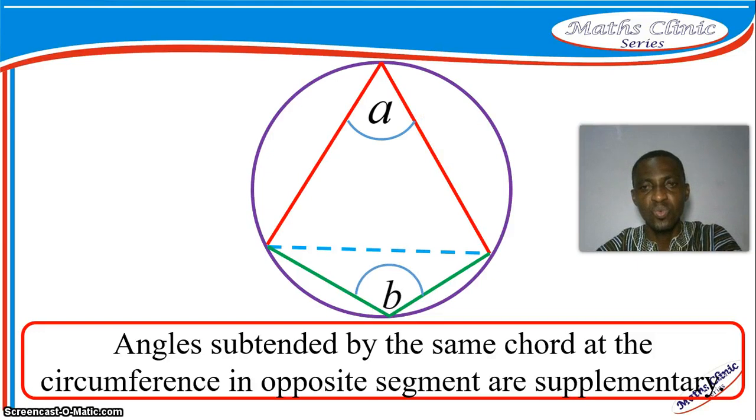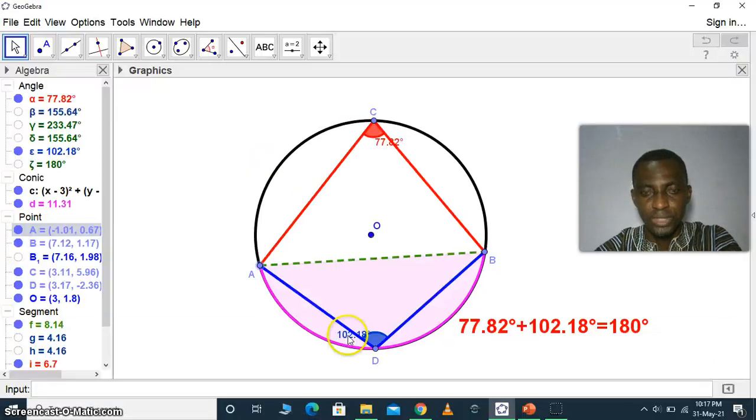And so that is what the theorem is all about. We want to demonstrate this with the help of GeoGebra. With GeoGebra, we can see that when we have a chord called AB, or it could be arc ADB...